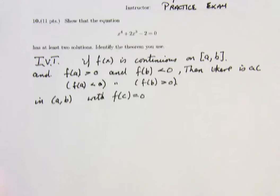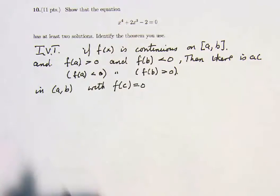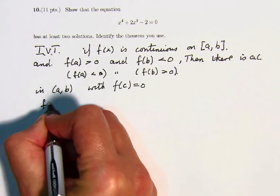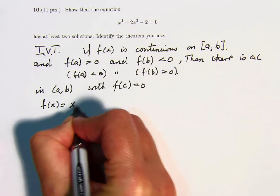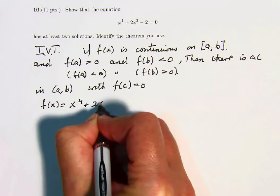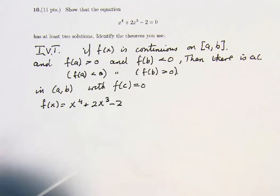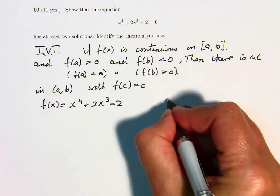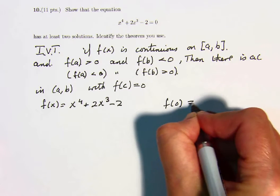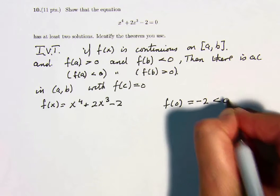And we can apply this here. Here we have a polynomial, so we let f of x equal x to the 4 plus 2x cubed minus 2. And notice that f of 0 is negative 2, which is less than 0.